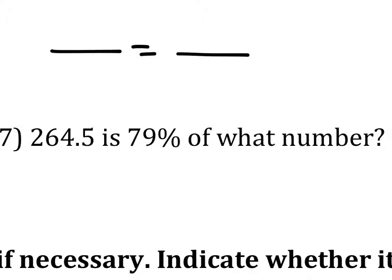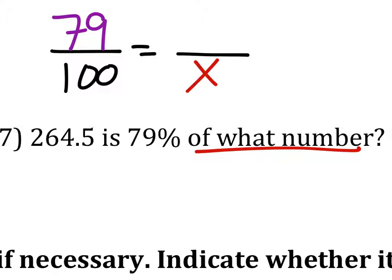So the whole value is unknown because it's of what number, and it's always out of 100, right? We know the percent in this situation is 79%, which goes above the 100. And the part was given as 264.5.